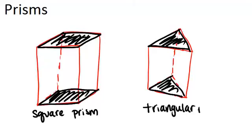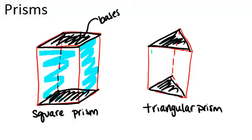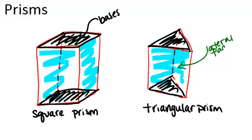Notice that in each case, the prism, the bases, are connected by rectangles. So all of these faces that connect the bases in both the square prism and the triangular prism are rectangles. So even if the bases are not rectangles, the lateral faces will always be rectangles. So these are called lateral faces, and they are always rectangles for prisms.